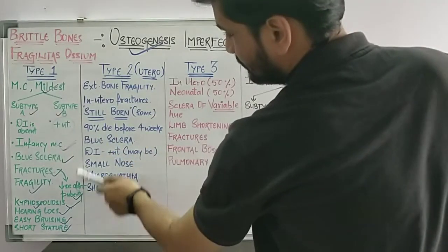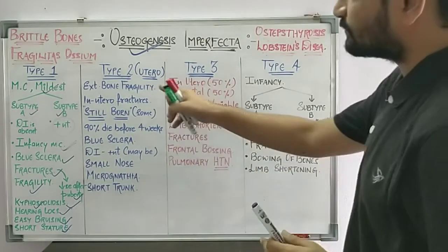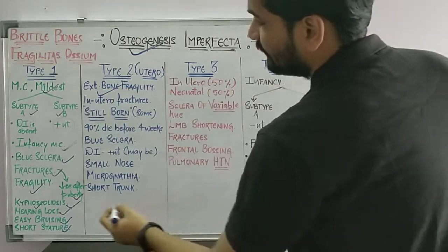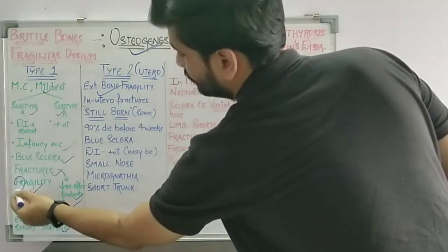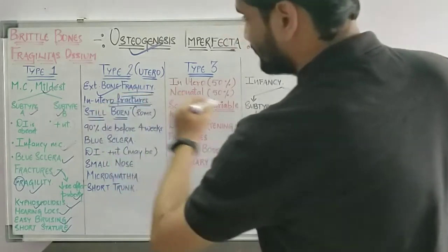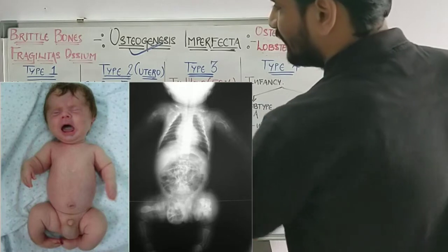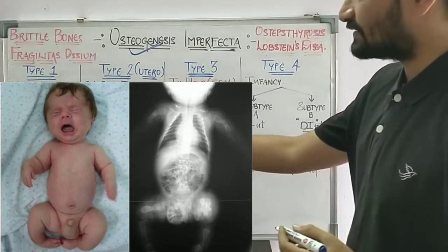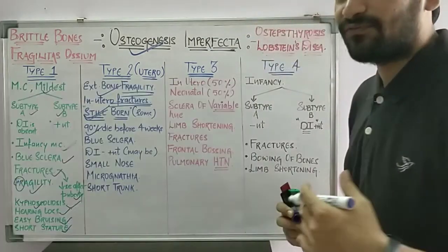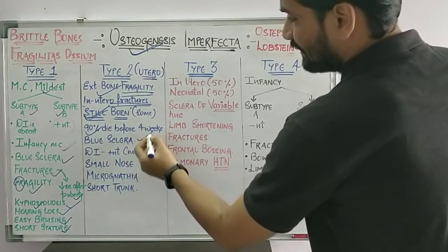Moving on to Type 2, which is mostly seen in utero. There will be extreme bone fragility — compared to the mild to moderate fragility in Type 1, Type 2 presents with extreme bone fragility. In utero fractures will be seen. Many births are stillborn, and 90% of affected children die before they cross the age of 4 weeks.